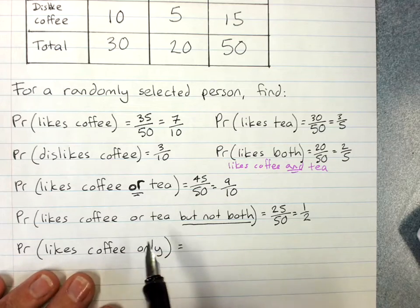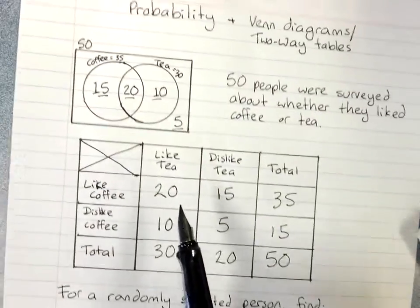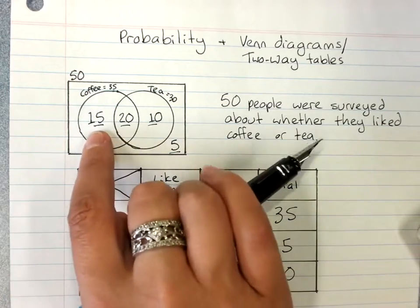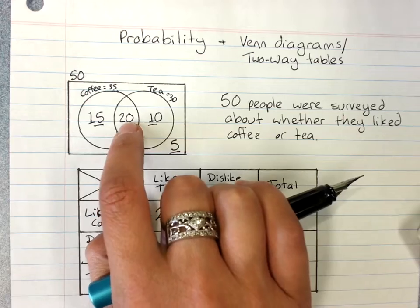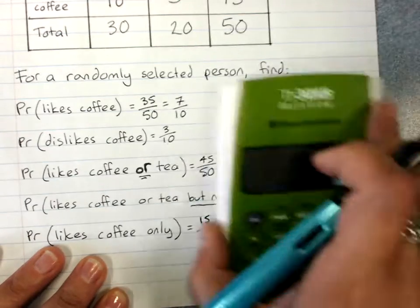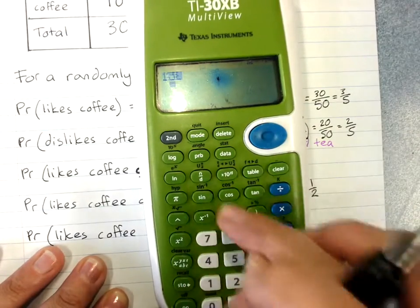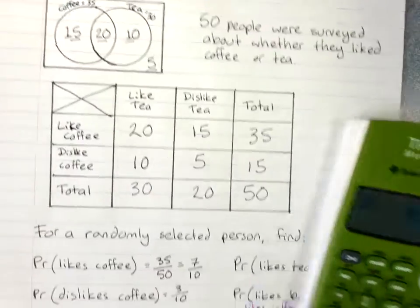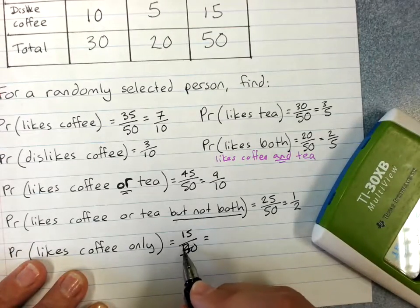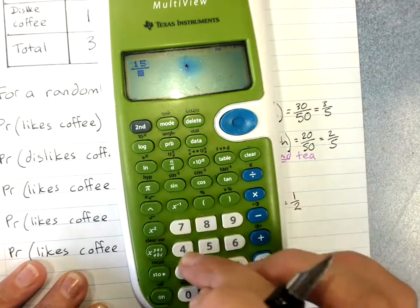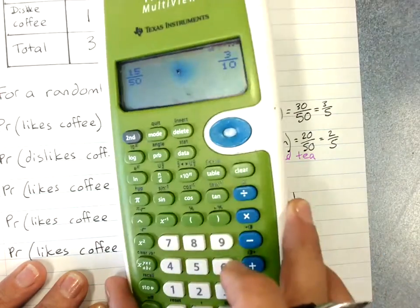Probability that they like coffee only. Again, easier to go to your Venn diagram. Coffee only. That is these coffee people but not these coffee people because they like tea as well. 15 out of... Can we simplify? 15 out of 40. Is that out of 40? It's out of 50. Sorry. 15 out of 50. I'm getting tired. 15 out of 50. 3 out of 10.